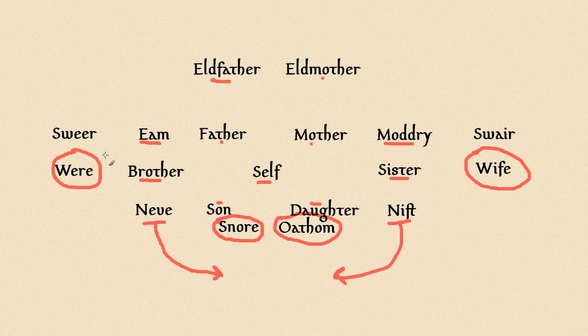In Old English, were and wife could mean man and woman, and they could also mean husband and wife, and they could also be used as adjectives to modify nouns, so they could refer to male and female.